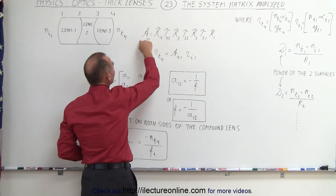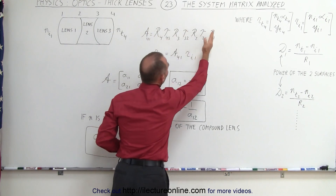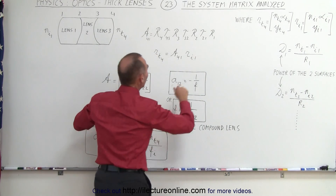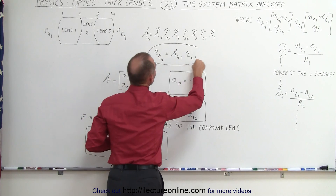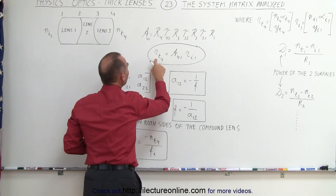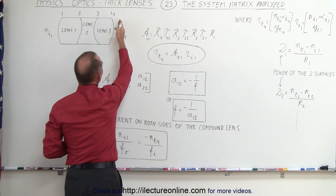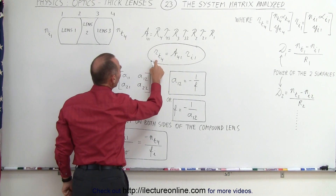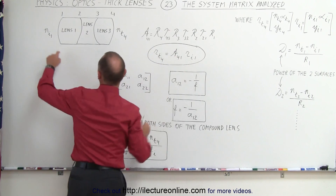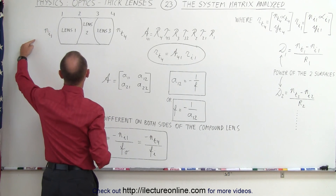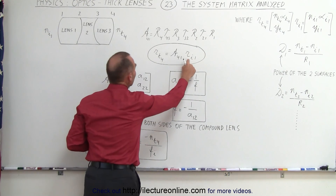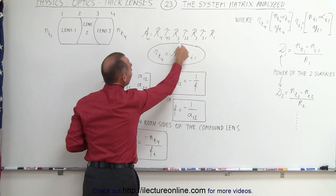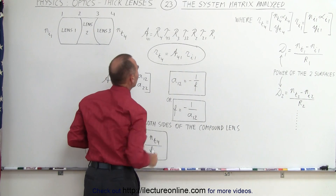The system matrix simply represents the multiplication of all these matrices in a compact form, where we can see that the outgoing ray — the ray that transmits across boundary number 4 — is equal to the incoming ray that contains information about the ray entering the compound lens system, multiplied by the system matrix.